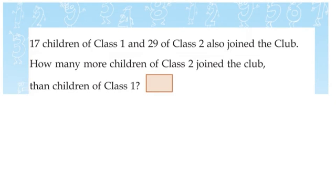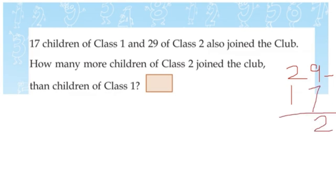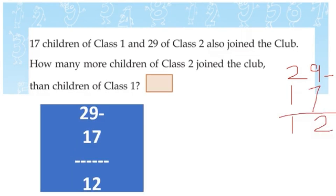How many more children of class 2 joined the club than class 1? 29 minus 17: 9 minus 7 is 2, 2 minus 1 is 1. The answer is 12 more children.